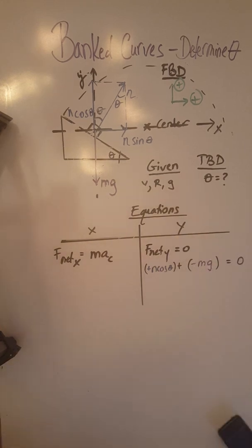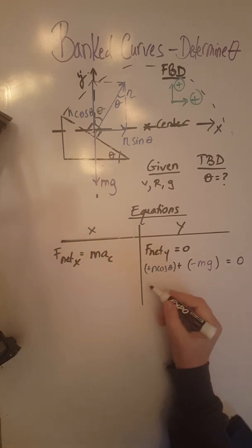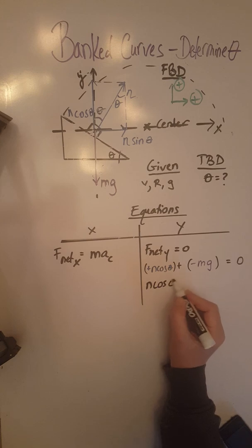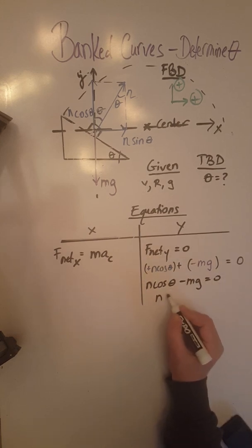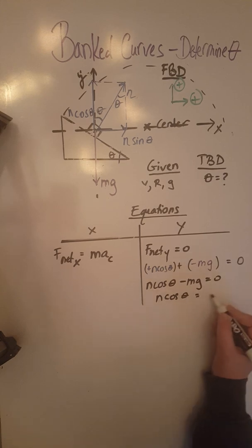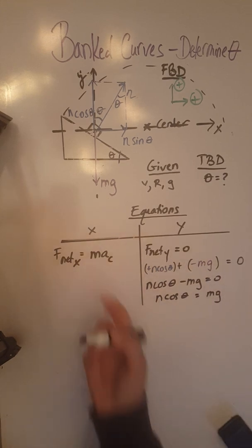When we simplify this, we end up having n cosine theta minus mg equals zero or n cosine theta equals mg.